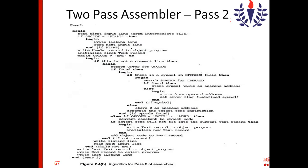If the object code does not fit into the current text record, the text record is written to the object program and a new text record is initialized. The object code is then added to the text record, the listing line is written, and the next input line is read. This process continues until the assembler reaches the END. Once it does, it writes the last text record, the end record, and the last listing line — creating both the object file and the listing file.